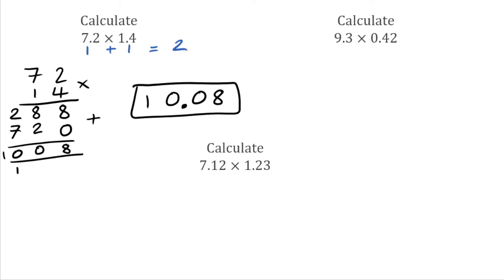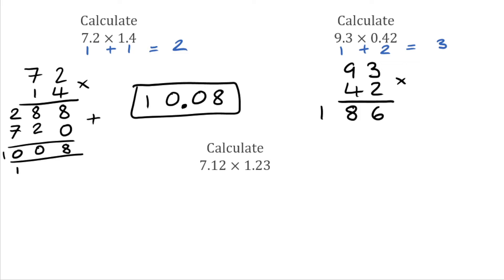Moving on, we've now got 9.3 multiplied by 0.42. We've got one decimal place in the first number and two decimal places in the second number, so our overall answer is going to be to three decimal places. We remove the decimals and do 93 multiplied by 42. So: 2 times 3 is 6, 2 times 9 is 18. Moving over to the 4 with a placeholder of 0: 4 times 3 is 12, so 2 carry the 1. Then 4 times 9 is 36, add that 1 is 37.